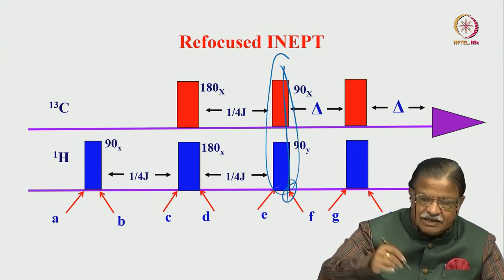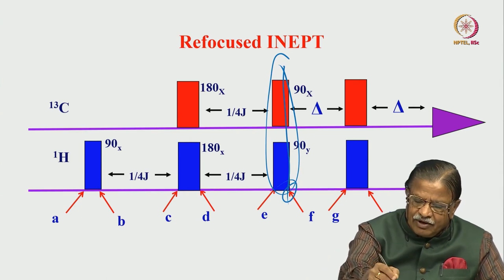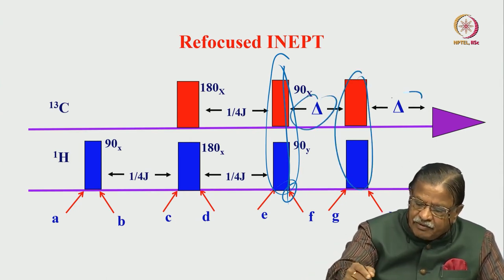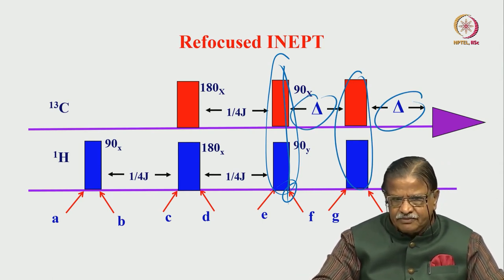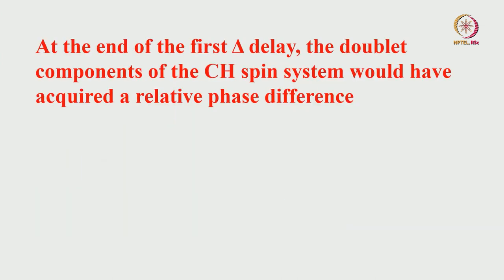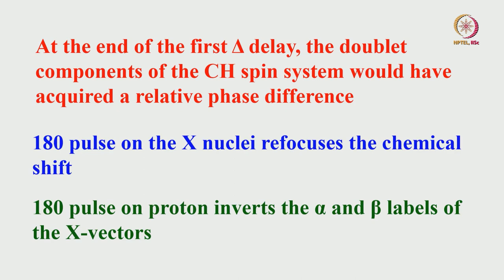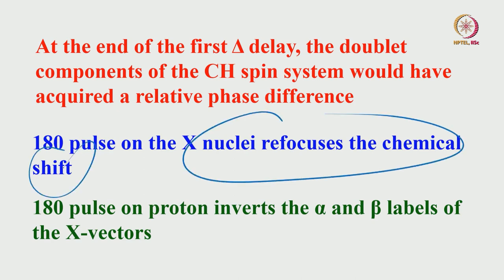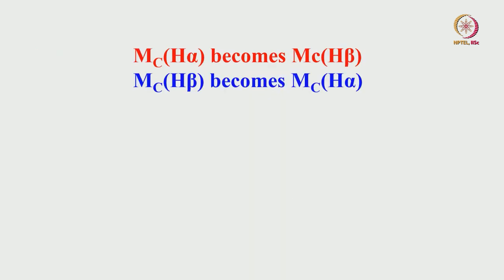Up to point F is regular INEPT. For the refocused INEPT, we give a spinacos-like sequence with two delays in between and 180 pulses on both proton and carbon. At the end of the first delay, the doublet components of the CI spin system would have acquired a relative phase difference. The 180 pulse on the X-nucleus refocuses the chemical shift, while the 180 pulse on proton inverts the alpha and beta spin states of X vectors — because it is coupled to that, and the labels get interchanged.